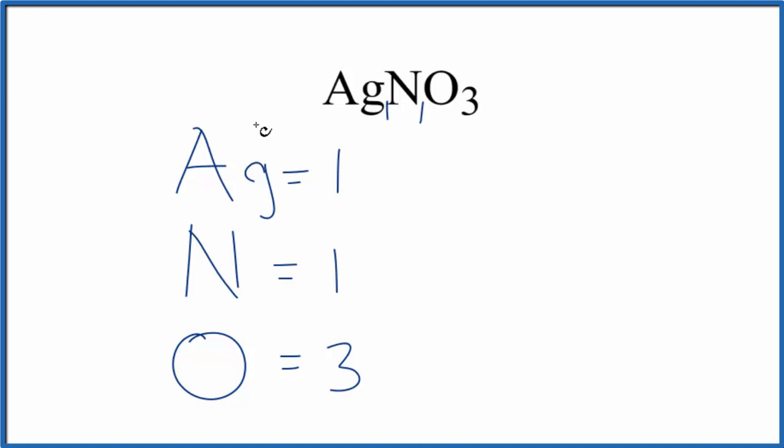To do that, we'll just multiply the number of silver atoms, which is one, times Avogadro's number. That gives us the number of silver atoms in one mole of silver nitrate.